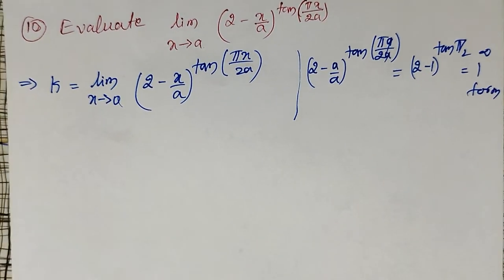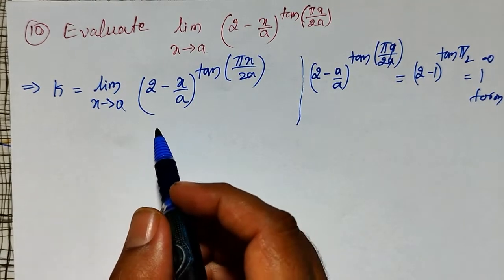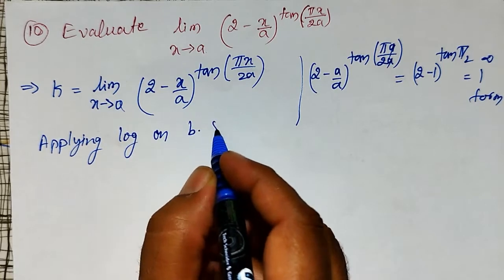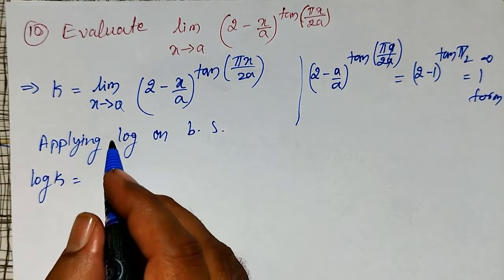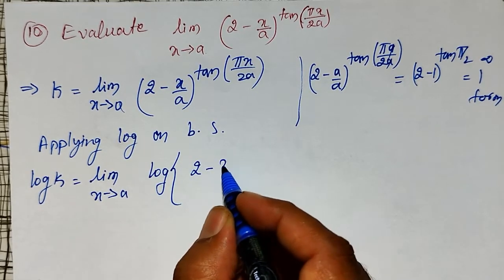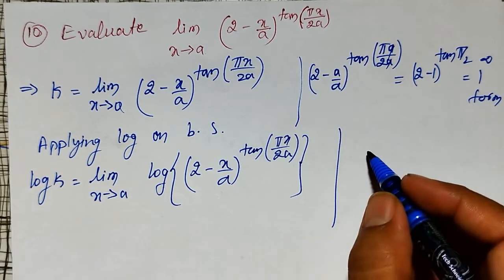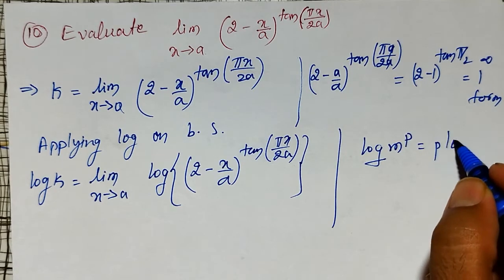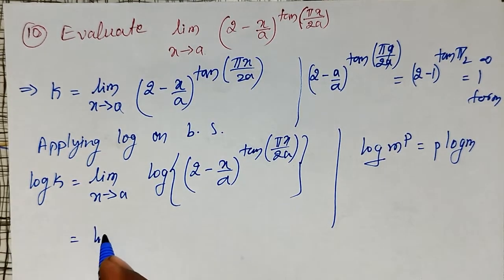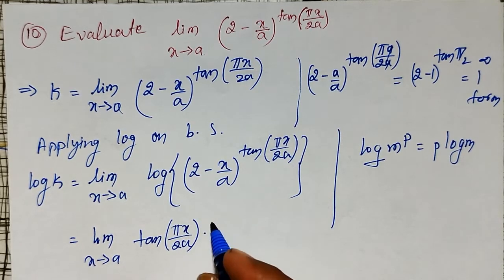Since it is the 1 raised to infinity form, I cannot evaluate directly. To evaluate, I have to apply log. Applying log on both sides: log k equals the limit as x tends to a of log of (2 minus x/a) raised to tan(πx/2a). Using the log property — log of m to the power p equals p·log(m) — this becomes the limit as x tends to a of tan(πx/2a) times log(2 minus x/a).